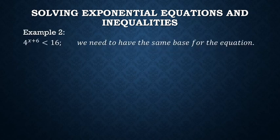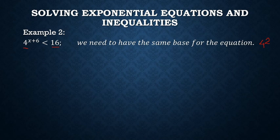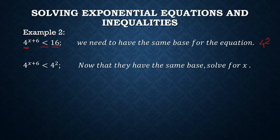Sample number 2 has different bases: 4 and 16. We need to express 16 in base 4. Since 16 is 4 times 4, it equals 4 squared. Our equation becomes 4 raised to (x + 6) is less than 4 raised to 2. Since the bases are the same, we eliminate the base and keep the exponents: x plus 6 is less than 2.